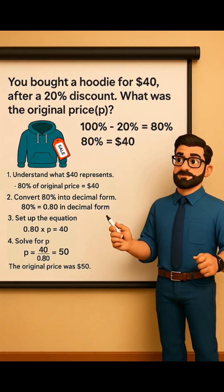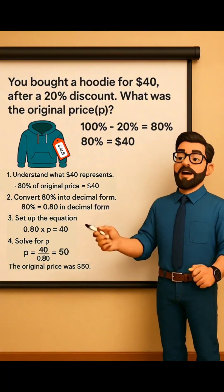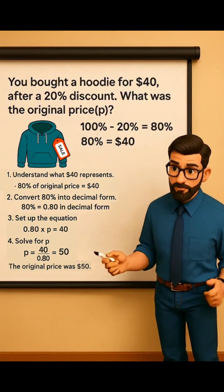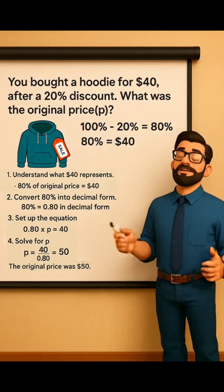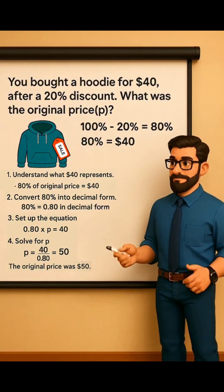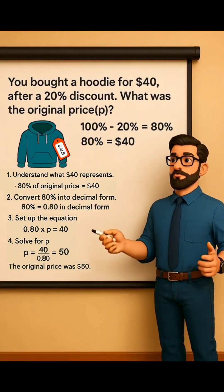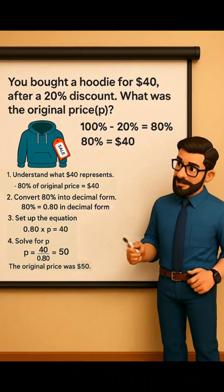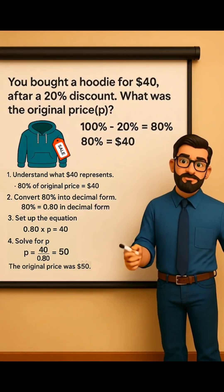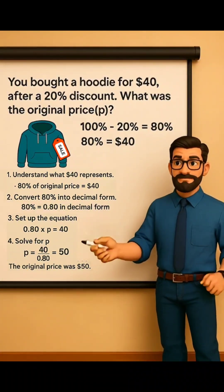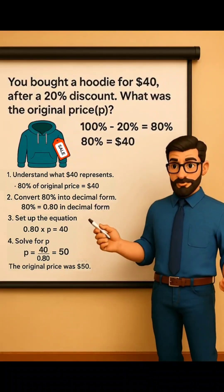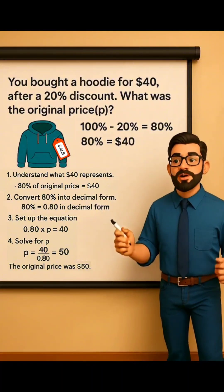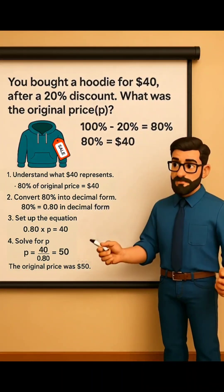Now let's solve this using the first method. Step 1: understand what the $40 represents — it's 80% of the original price. Step 2: convert 80% to decimal form: 80 divided by 100 equals 0.80. Step 3: set up the equation — 0.80 times P equals 40, where P is the original price. Step 4: solve for P by dividing 40 by 0.80. That gives you 50, so the original price was $50.